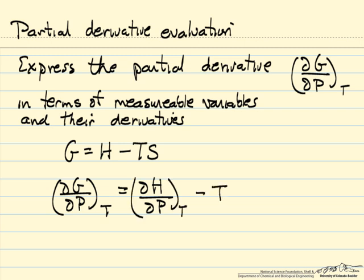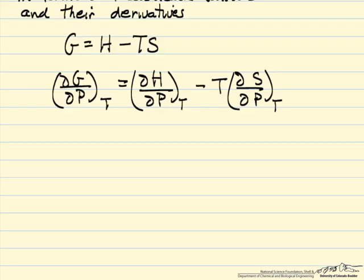Since temperature is constant, we can write it as minus T times the partial of S with respect to pressure at constant temperature. We didn't have temperature just pulled outside the derivative because it was a constant for this calculation.